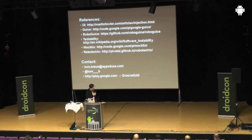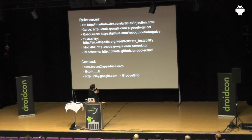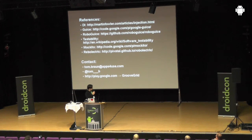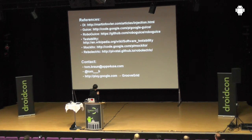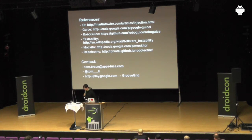If you want to dive deeper, I've collected some references. The first is the article by Martin Fowler — he essentially defined what dependency injection is. Then Guice and RoboJuice, the Wikipedia article, Mockito for mocking — you could also use EasyMock or JMock but I like Mockito best — Robolectric, and of course my contact data. You can write me or follow me on Twitter, I wouldn't mind. We have time for questions. Thank you.